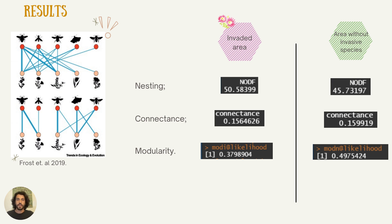The values we found showed that nestedness was higher in the invaded area, while connectance and modularity were lower — consistent with fewer species, like Apis and Carpobrotus, dominating many interactions. This matched our expectations from the field. Higher connectance and modularity in the non-invaded area represented networks where interactions are more dispersed and more specialized, which was also a great finding.